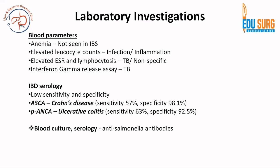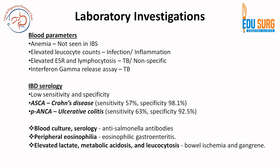Blood culture and serology for anti-Salmonella antibodies can be done. Peripheral eosinophilia may suggest eosinophilic gastroenteritis. Elevated lactate, acidosis, and leukocytosis together are common in bowel ischemia. Thrombophilic states such as protein C, protein S, factor V Leiden, and lupus anticoagulant can be assessed in blood. CEA, if very high, suggests colorectal cancer, though it is not very specific — more than 10% may be non-secretors.